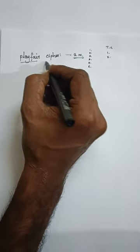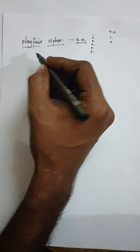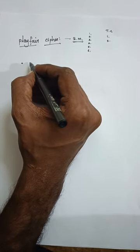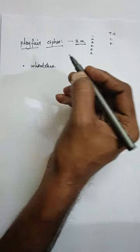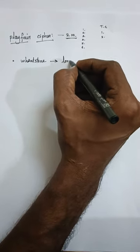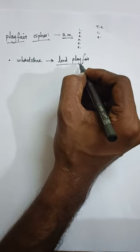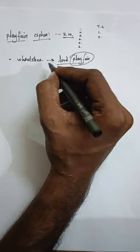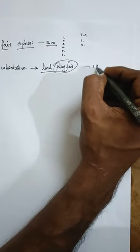Today we're going to check the Playfair cipher. Why do we have the name 'Playfair cipher'? This cipher was invented by Charles Wheatstone, but his friend's name was Lord Playfair, so later it was referred to as the Playfair cipher. It was invented in 1854 and this algorithm was used in World War One and World War Two.